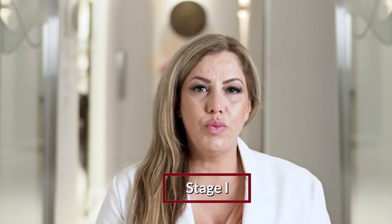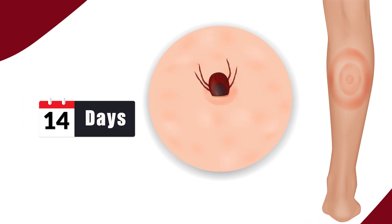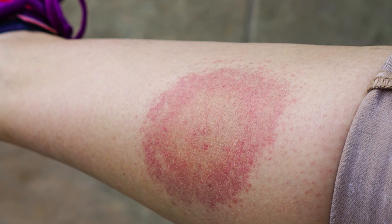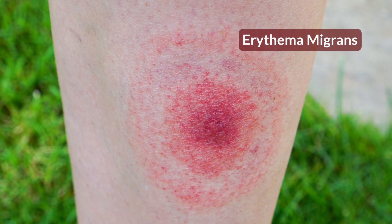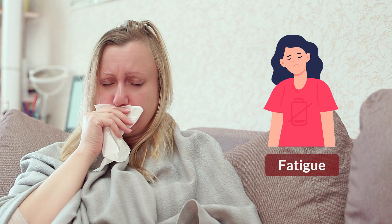Stage 1, or the early localized skin stage, usually occurs 7 to 14 days after a tick bite. The bacteria have not yet spread throughout the body and stay localized at the tick bite site. Patients usually develop a classic rash called erythema migrans that usually occurs as a red bump at the site of the bite that expands and shows as a bullseye pattern. The rash may or may not be associated with flu-like symptoms such as achiness, chills, sweats, fatigue, malaise, and headaches. These combinations of skin lesions and flu-like symptoms are the primary manifestations of the first stage of Lyme disease.